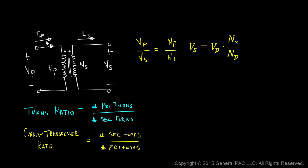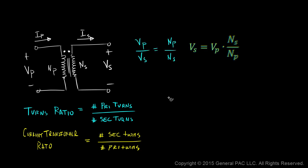Let's relate primary current to secondary current. If we want to relate primary current to secondary current, here's what we need to do: primary current divided by secondary current is directly proportional to the number of secondary turns divided by the number of primary turns.